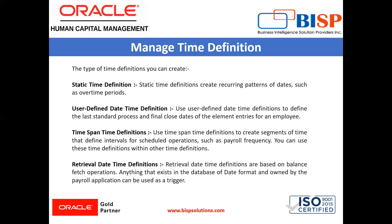The last standard process date is the last date on which the element is considered for normal processing in the payroll run, and the final close date is the date from which the element is no longer considered for processing.